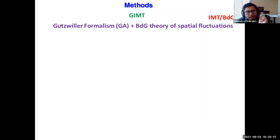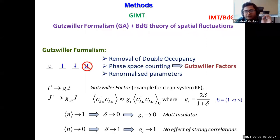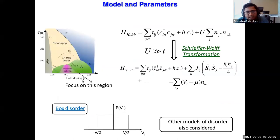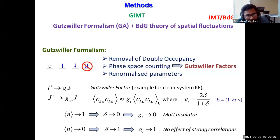Coupled with the Gutzwiller approximation, I call it GIMT — Gutzwiller inhomogeneous mean-field theory. What the Gutzwiller approximation does is get rid of double occupancies from the Hilbert space, because if you form a double occupancy you have a huge energy cost. Effectively, it renormalizes the hopping parameters: it changes t to a renormalized t multiplied by a Gutzwiller factor g_t, and similarly for the exchange interaction J.